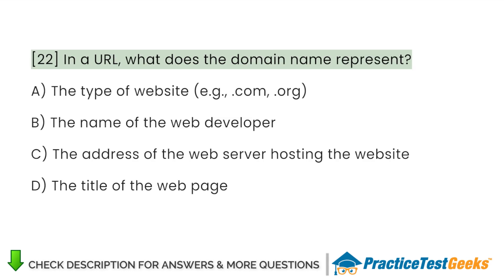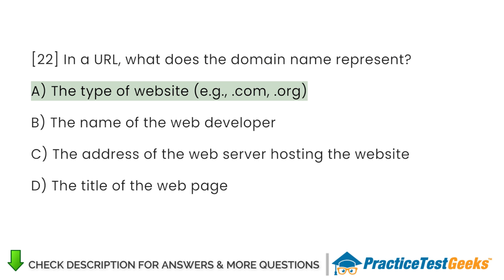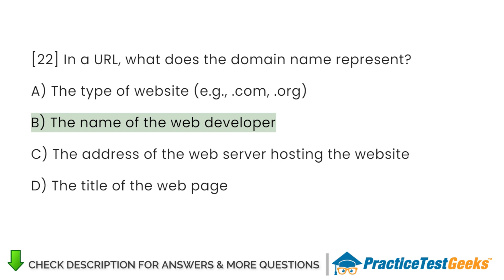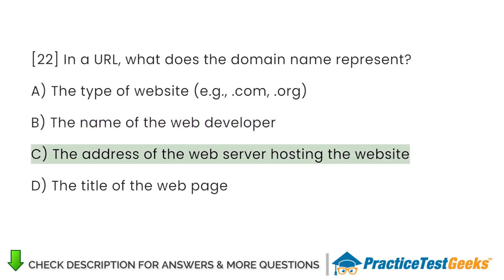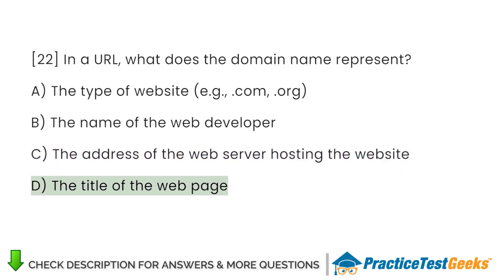In a URL, what does the domain name represent? A. The type of website, e.g., .com, .org. B. The name of the web developer. C. The address of the web server hosting the website. D. The title of the web page.